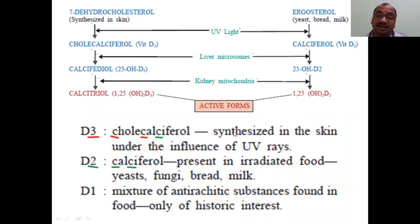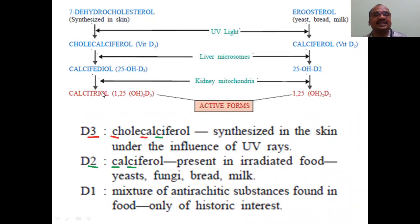Which vitamin D forms are active? Active forms: D3 is also called calcitriol — 'tri' is there. Either 'tri' is there or three C's must be there — then you can say it is D3. It is an active form — very important.